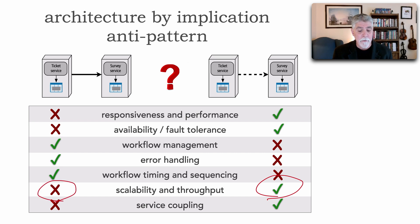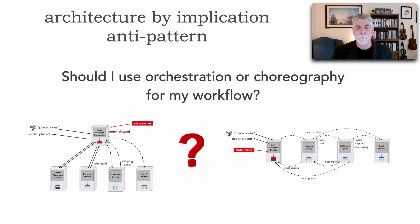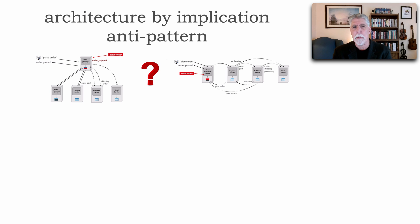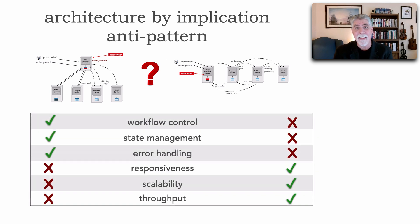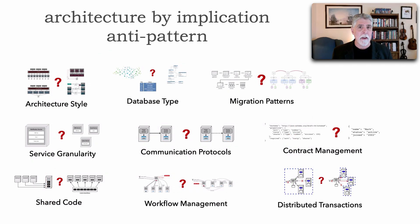Looking at the trade-offs between synchronous and asynchronous communication, scalability and throughput may or may not be achieved, along with responsiveness, performance, and availability — all aspects that are structural and architectural in nature. Another common question is whether to use orchestration or choreography for your workflow. If we use architecture by implication and don't have an architecture in place, we can again see that these trade-offs influence architecture — overall responsiveness, scalability, throughput — making this choice influences those architectural concerns. All of these choices have some sort of architectural implication and could bring our system down.